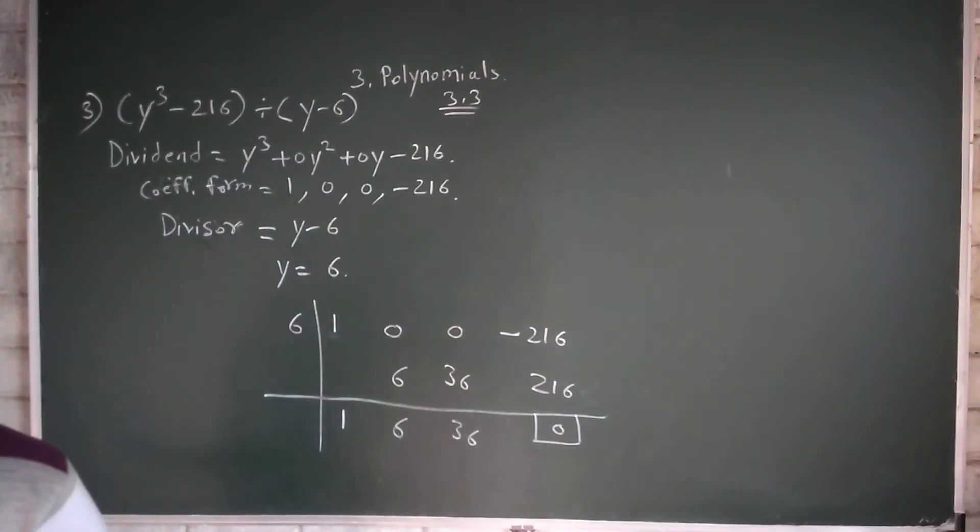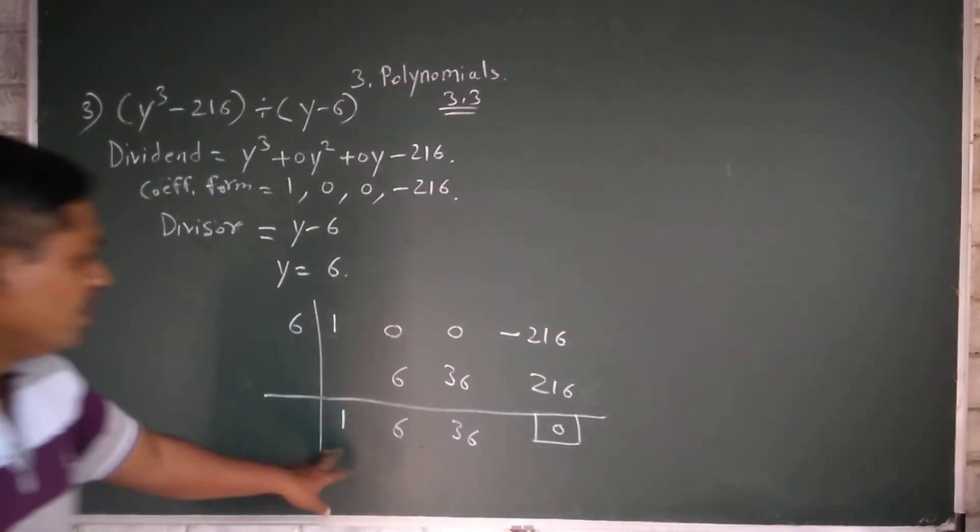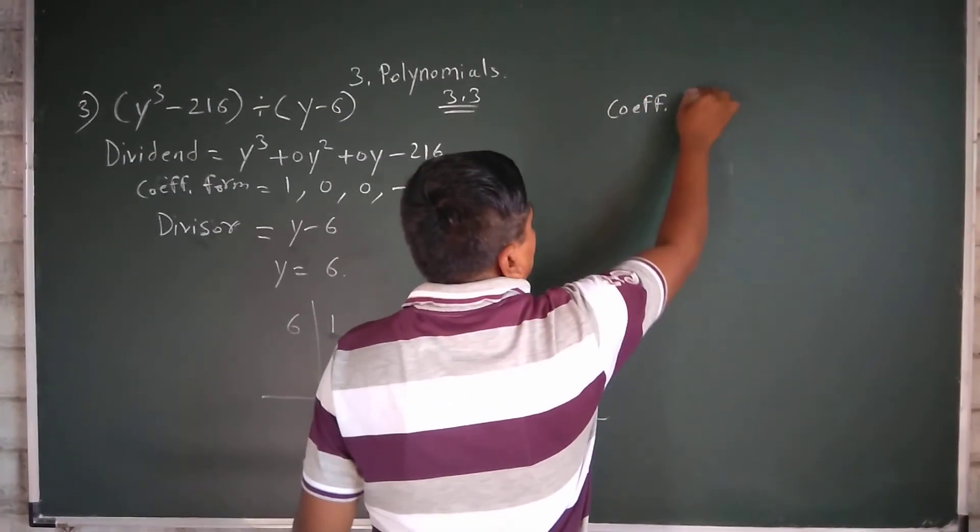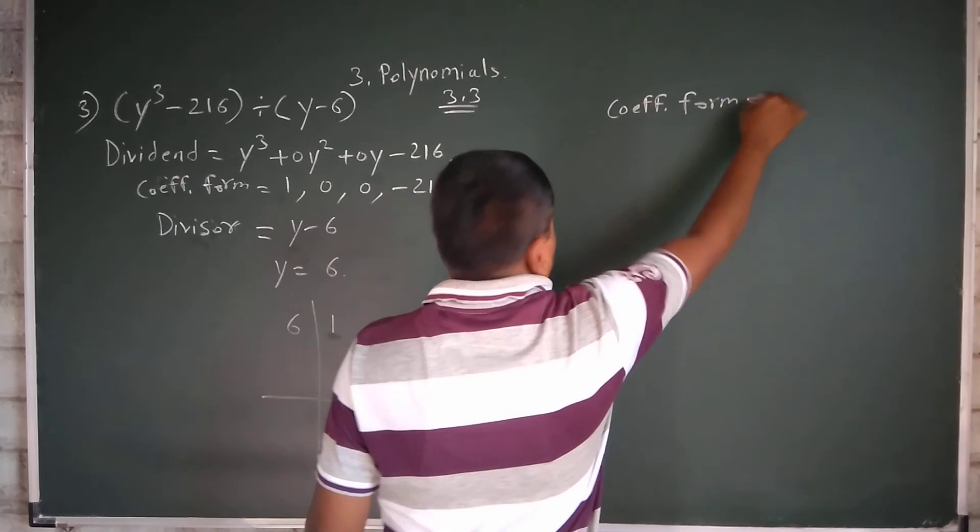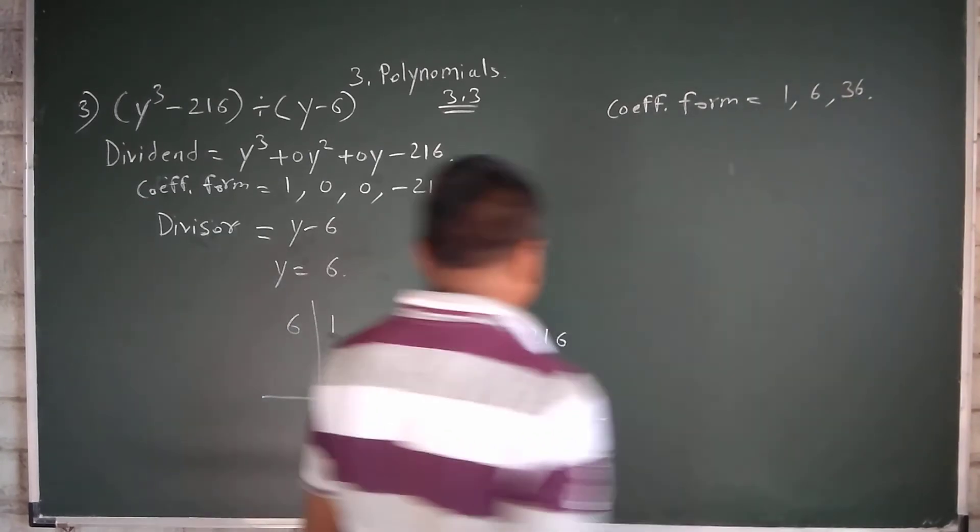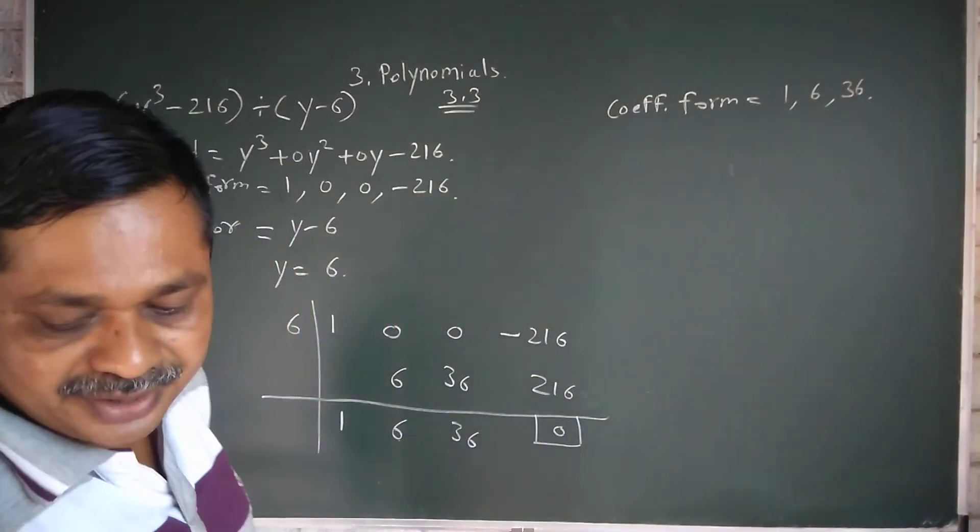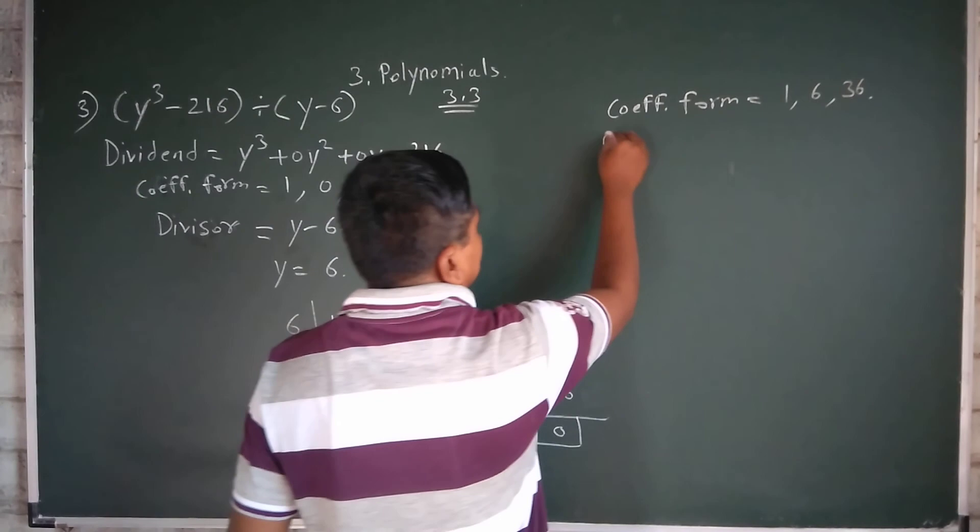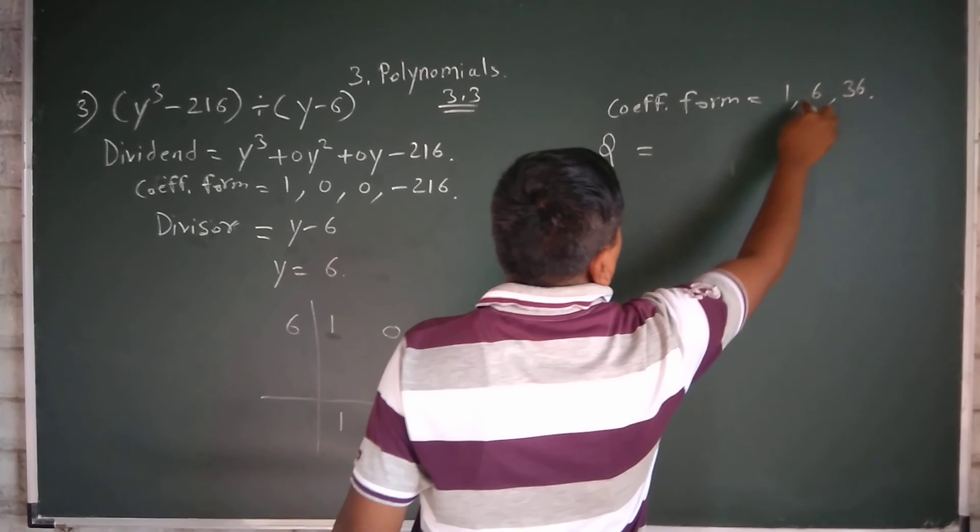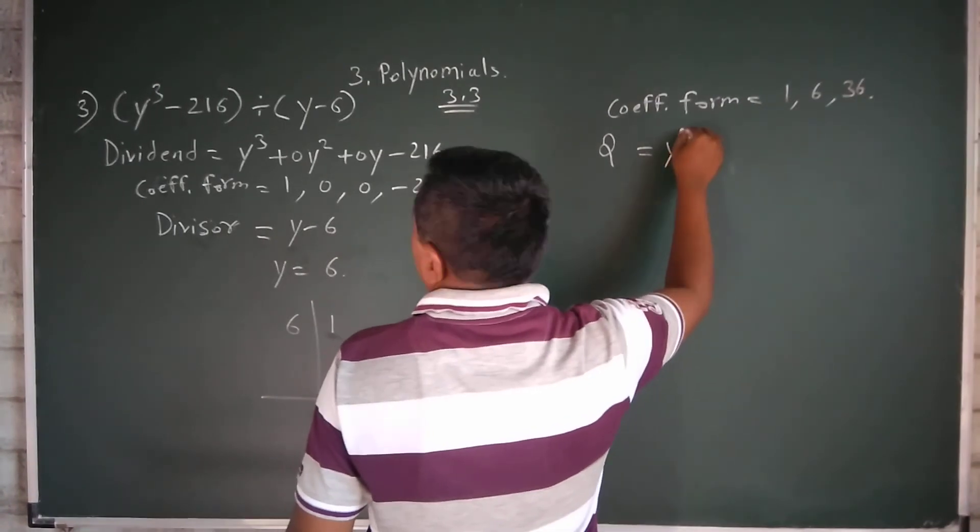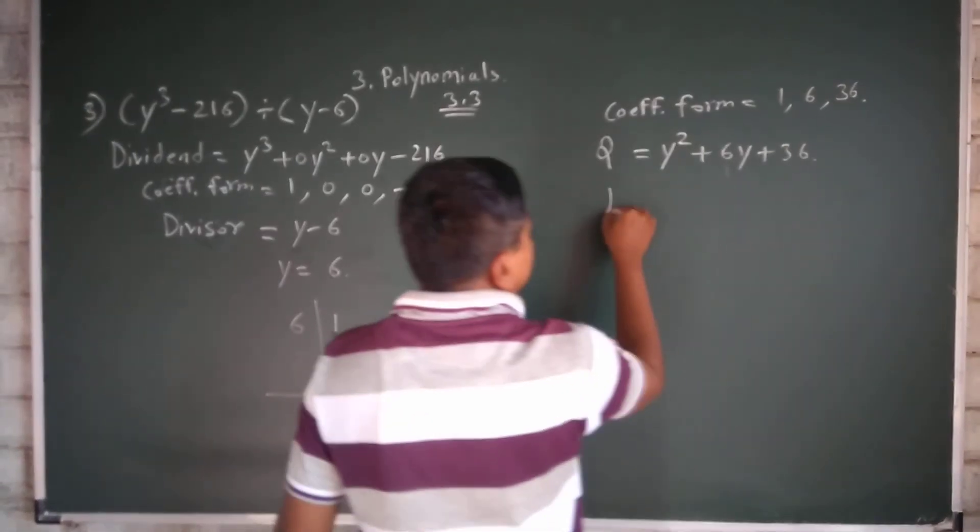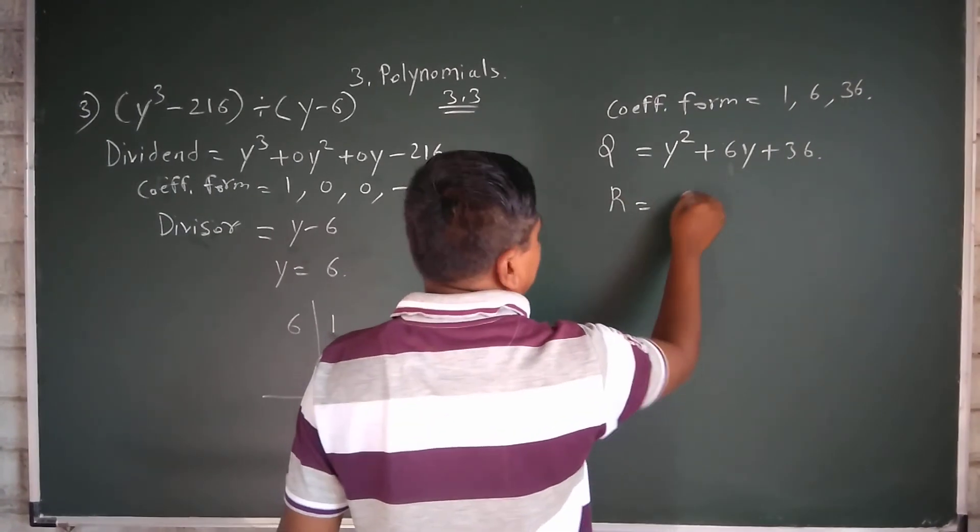Coefficient form of quotient: 1, 6, 36. Now we will write quotient: y² + 6y + 36, and remainder is zero.